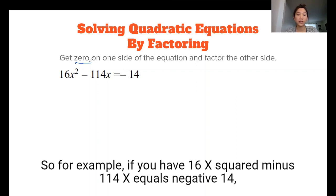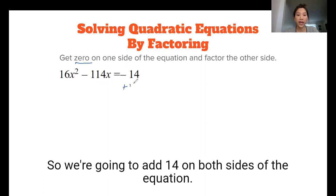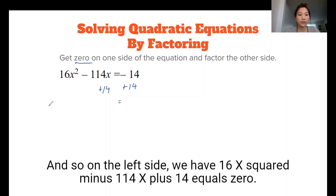So for example, if you have 16x² minus 114x equals negative 14, we want to get zero on one side of the equation first. So we're going to add 14 on both sides of the equation. And so on the left side, we have 16x² minus 114x plus 14 equals zero.